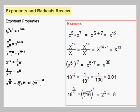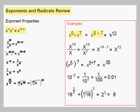One basic property is the product rule. If you have a base x to the m power times the same base x to the n power, your result is x to the m plus n — you add the exponents. Here's an example: x to the fifth times x to the seventh. It's the same base, so we can add the exponents to get x to the five plus seven, or x to the twelfth.